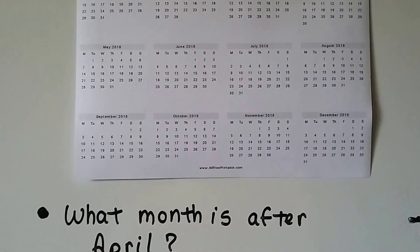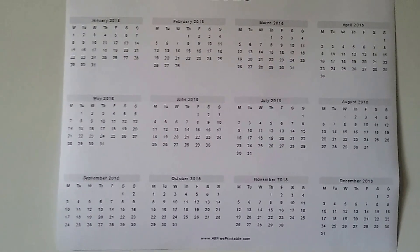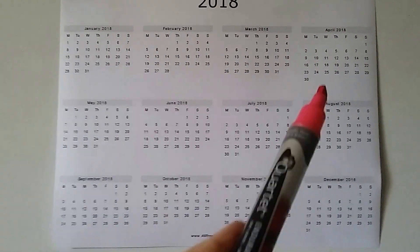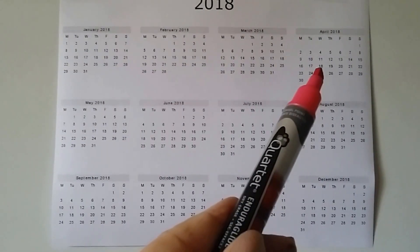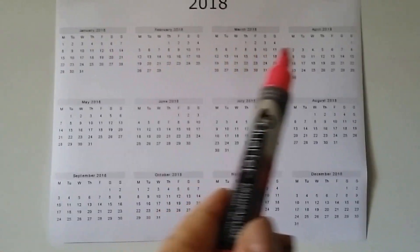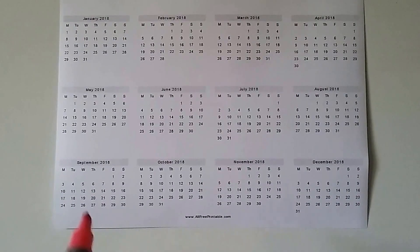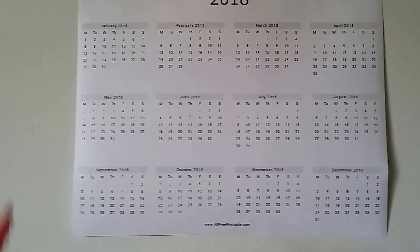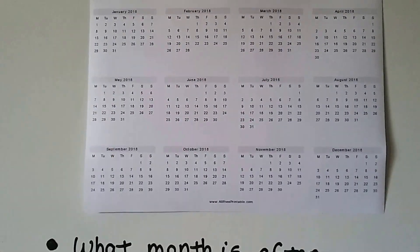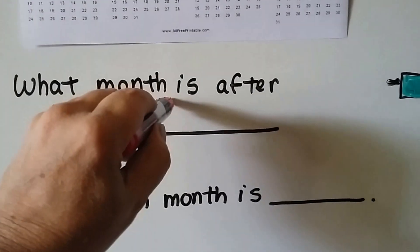So what month is after April? Let's find April — here it is. The way we read this calendar is we come across this row, then we go to this row, and then we go to the last row. The next month after April would be down here — it would be May.